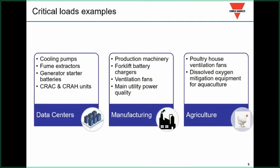Let's look at some examples. Data centers are huge in the world and in the United States, and they garner a lot of attention. Things that can bring a data center down are simple things: cooling pumps, fume extractors, generator batteries, heating and air units—very small pieces of a puzzle, but very important. In manufacturing, we could list pages and pages of critical loads depending on the facility.